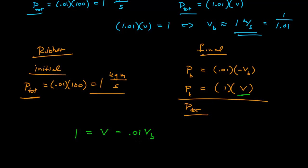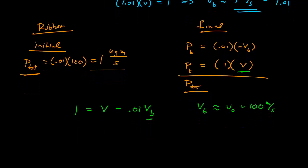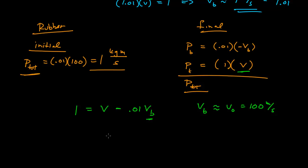Well, if it's rubber, it's going to bounce back with nearly the same speed it had initially. So we're going to say that the velocity of the bullet on the rebound is approximately the initial velocity, which was 100 meters per second. And so that then gives me 1 equals v minus 1, so our v is approximately 2 meters per second.